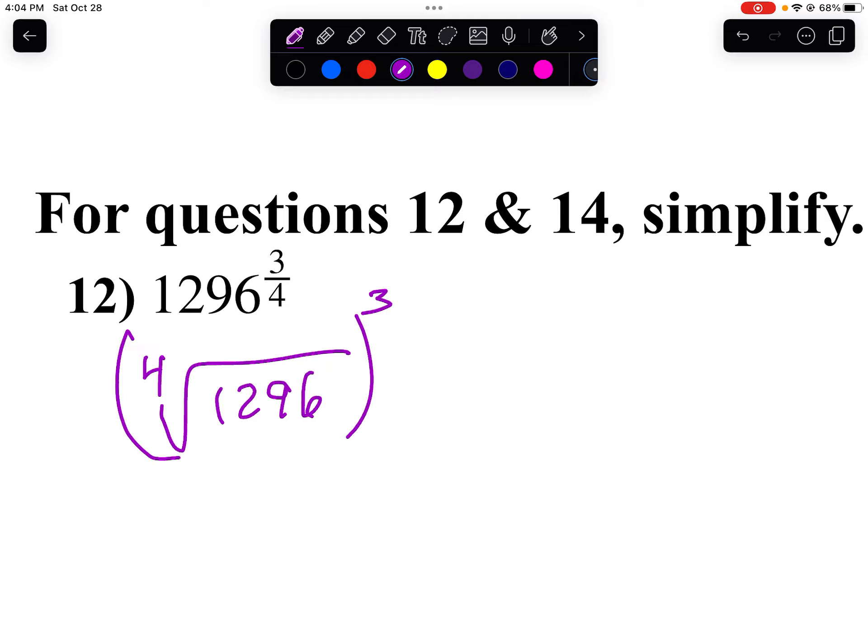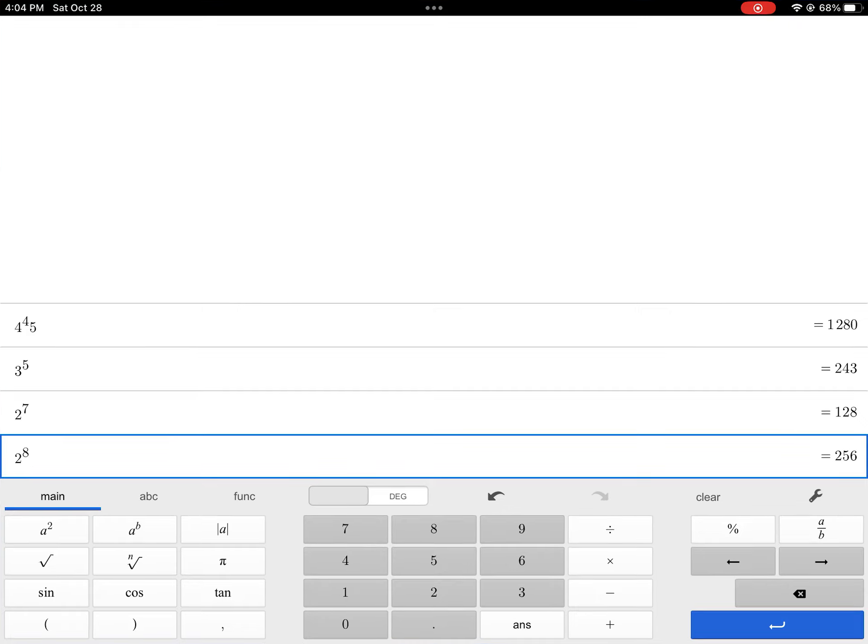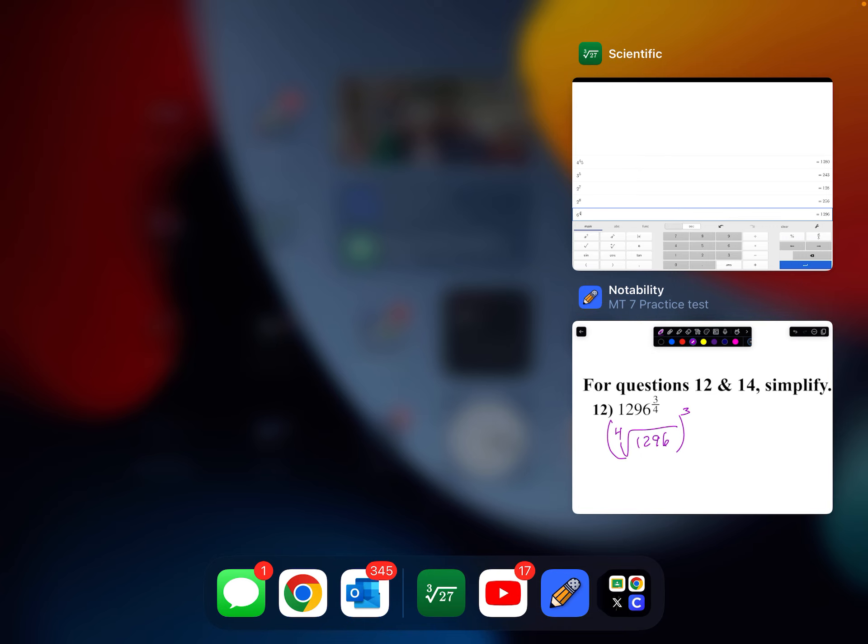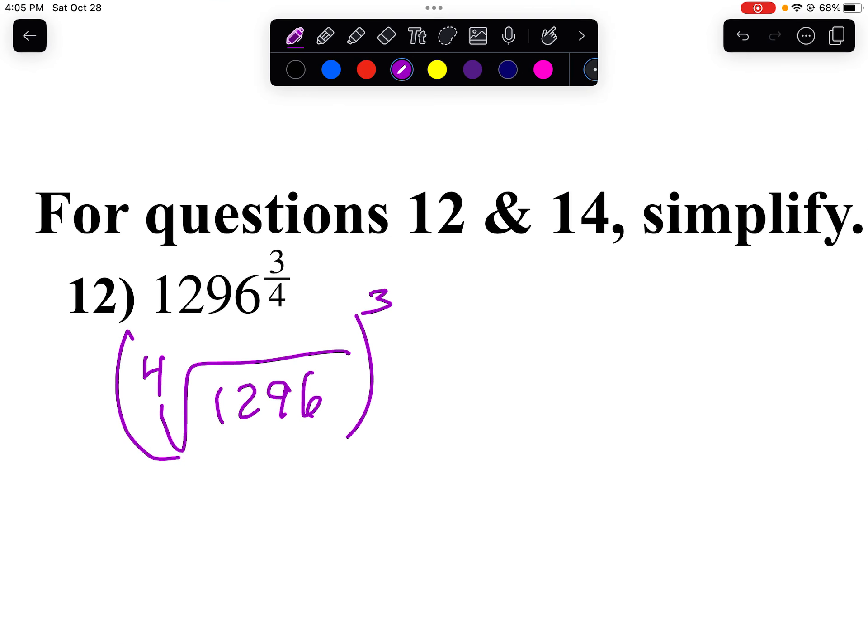So if I take 6 to the 4th power, oh, I get 1296. So in other words, the 4th root of 1296 is 6. If I raise that to the 3rd power, I get 216. And there's your answer. 6 times 6 times 6 is 216.